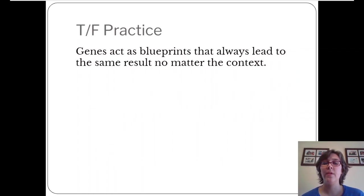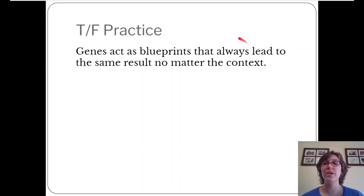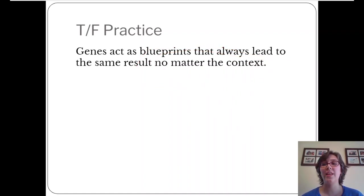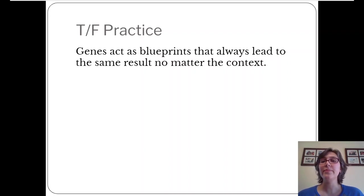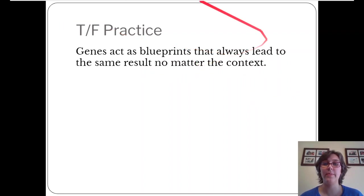Practice: 'Genes act as blueprints that always lead to the same result no matter the context.' We know genes act as blueprints is true, but the word 'always' is a red flag. We've learned about epigenetic and environmental changes that can alter the way genes are expressed or the way a person develops. So genes always leading to the same exact result is just not true — that word 'always' makes that sentence false. Because the second half is false, the whole statement is false.